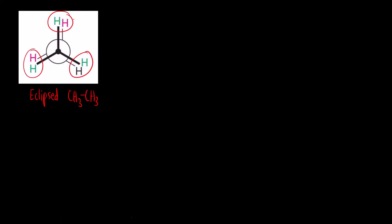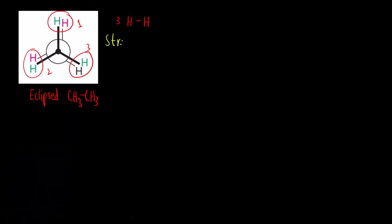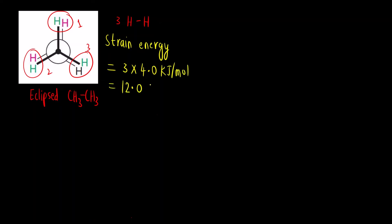Now let us see how to actually calculate strain energy in molecules. The first example is the eclipsed conformation of ethane (CH3–CH3). There are three H–H eclipsing interactions. The strain energy per H–H interaction is 4 kJ/mol, so the total strain energy for the eclipsed conformation of ethane is 3 × 4 = 12 kJ/mol.